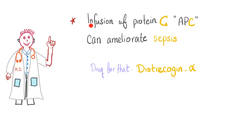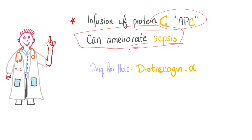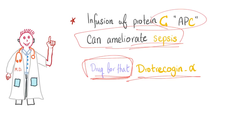Clinical Pearl: Did you know that infusion of protein C can ameliorate or mitigate sepsis — decrease the symptoms of sepsis? The drug used for that is drotrecogin alfa.